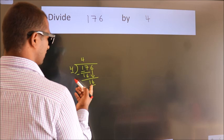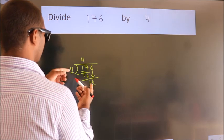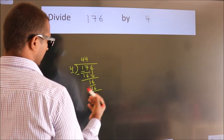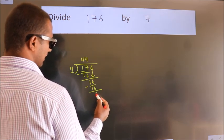So, 16. When do we get 16? In the 4 table, 4 fours equals 16. Now, we subtract. We get 0.